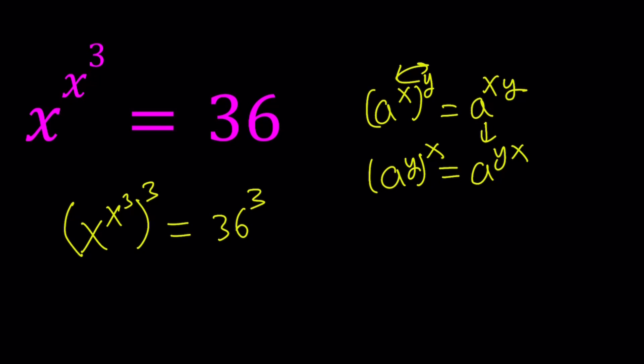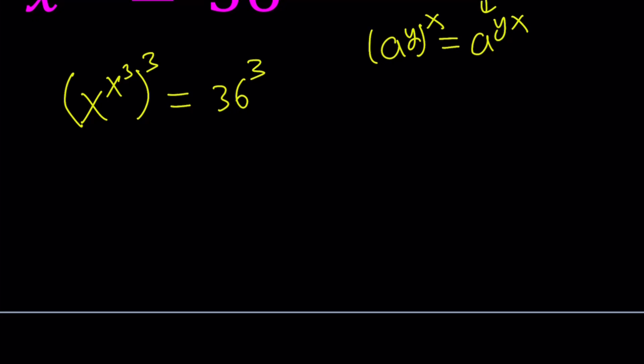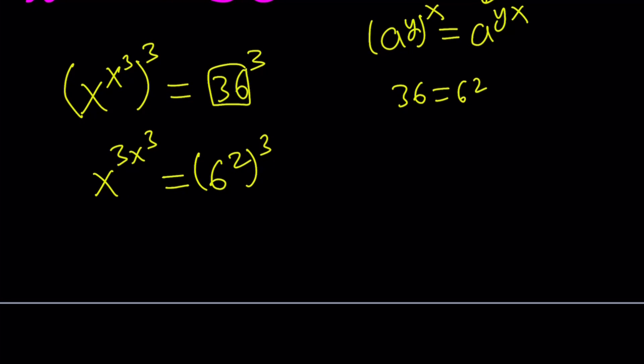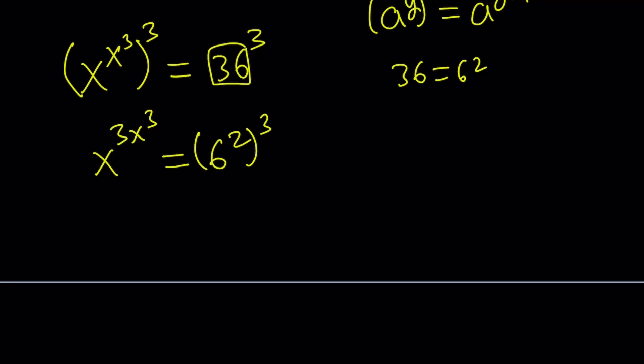Let's go ahead and use the first property of multiplying the exponents. So this gives us x to the power 3x cubed equals 36 to the third power. And 36 can be written as 6 squared, so we can write it as 6 to the second power to the third power, which is a good thing you'll see in a little bit. Now here we have x to the power 3x cubed. The bases and the exponents are not still the same. So our goal is to get something like a to the power a equals b to the power b on both sides.